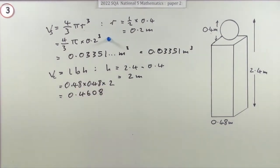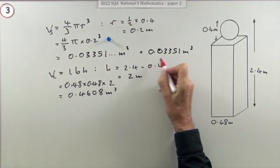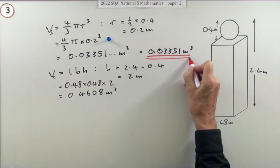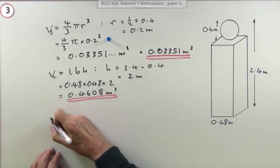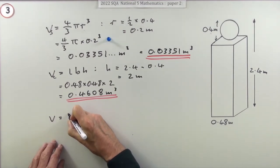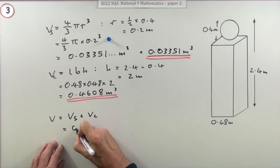Pop that in: 0.48 times 0.48 times 2. That doesn't get a mark yet until you've shown that you're going to add the two together. Multiply that out: 0.4608 meters cubed.